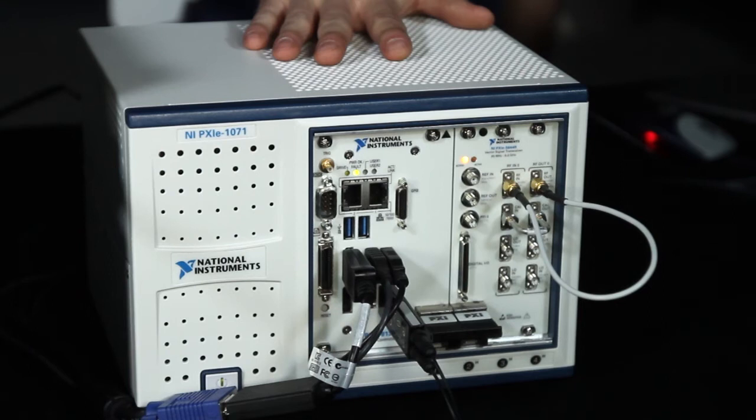802.11ac is particularly challenging because of the 256-QAM modulation, the high bandwidth signal, multiple antennas, and it operates in the 5 GHz band.